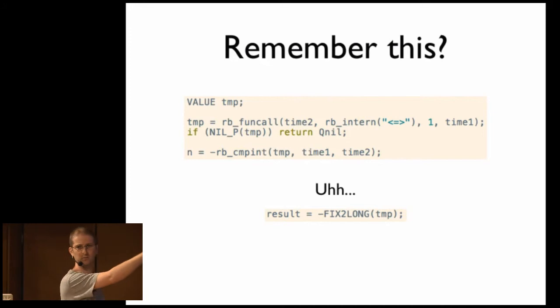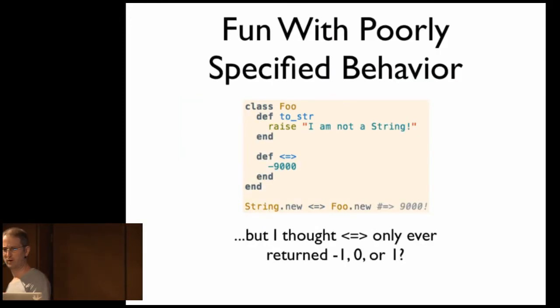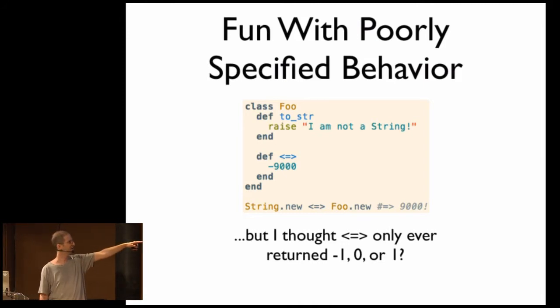And second, the top here is from time spaceship operator, and the bottom is what we have in String. In time, when we do the reverse comparison, we call this rbcompint and negate that, which is going to bracket our values. In String, we're just negating the fixedNum conversion from long of whatever is returned. So this is where we get to have fun with poorly specified behavior in Ruby, right? So you can define a class. This works in, I think, 1.9 still. You can define a class that defines a nonsense 2str method. Let's have it raise, right? And you can define a spaceship operator that returns whatever value you want. And if you compare that object with a String, first of all, 2str never gets called. And secondly, we're just going to negate whatever the heck the spaceship wanted to return. So yeah, that's kind of unexpected.